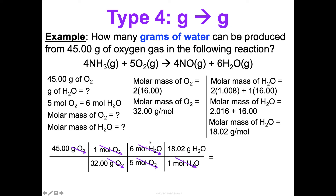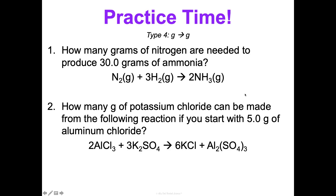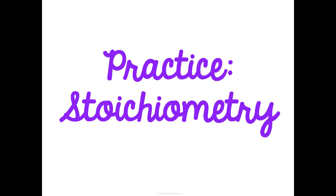Multiply across the top, multiply across the bottom, divide, and you get 30.41 grams of water. I'd go back and punch this into your calculator one more time to make sure you did it right. Here are some practice problems on type four, and then we're just going to do some stoichiometry practice together as a class to make sure you really get this down. You guys can totally do this — I know you can, and I'm excited to watch you learn this.